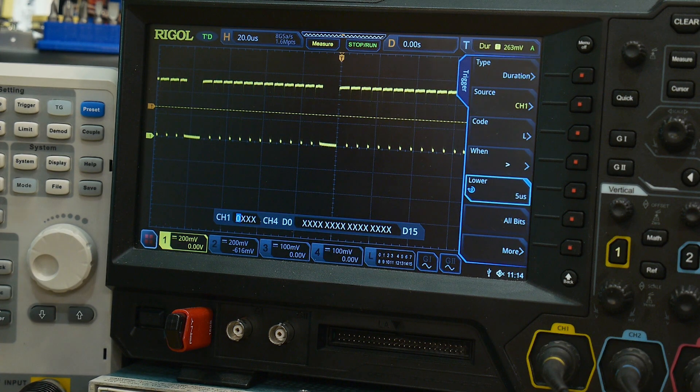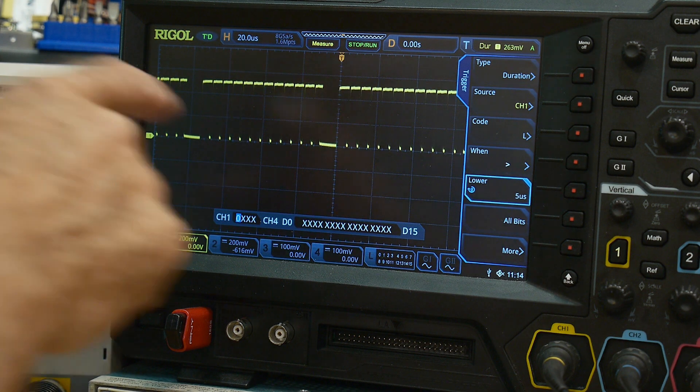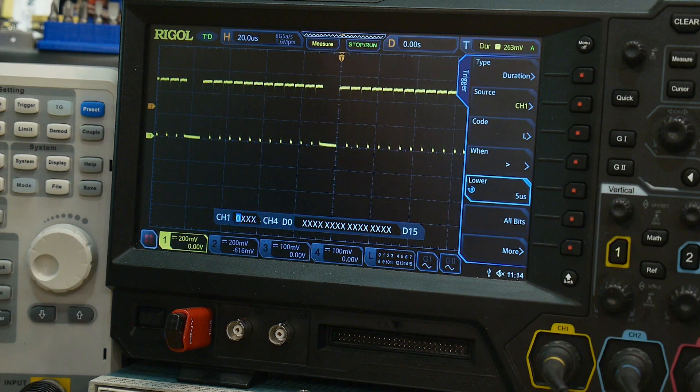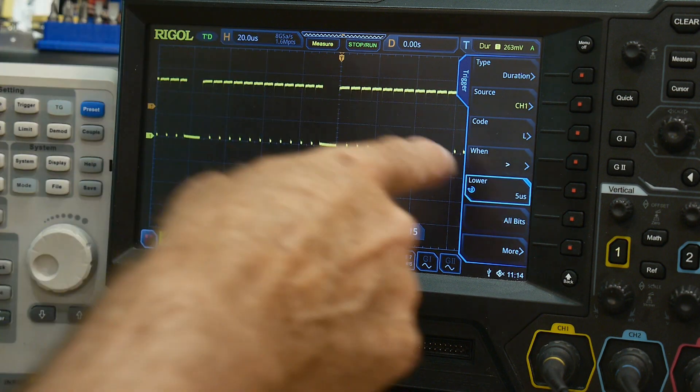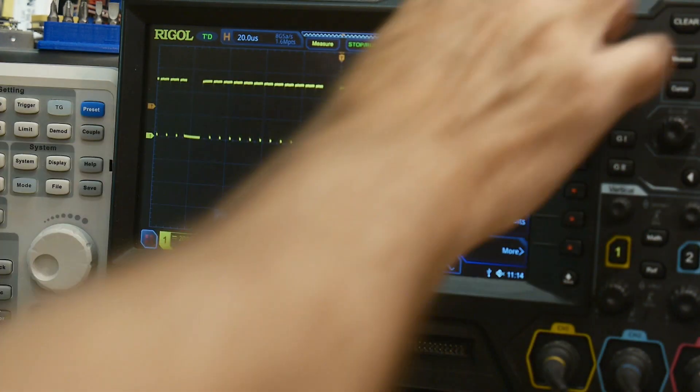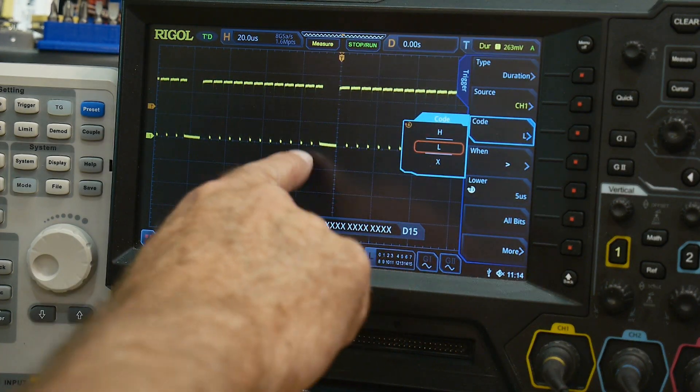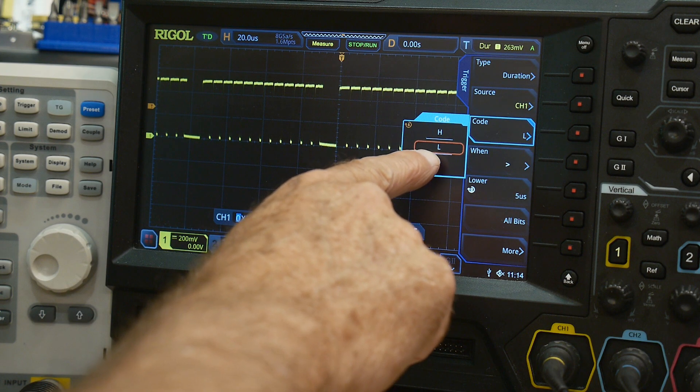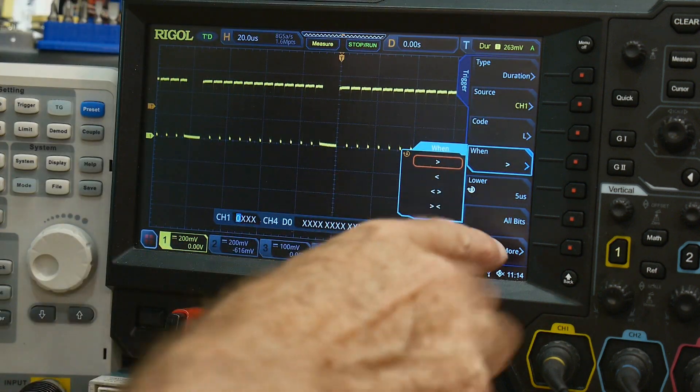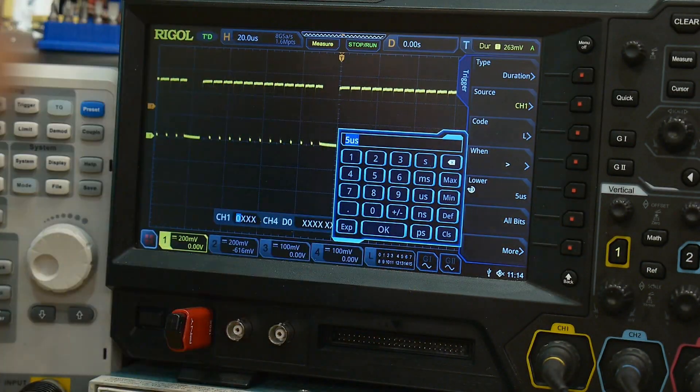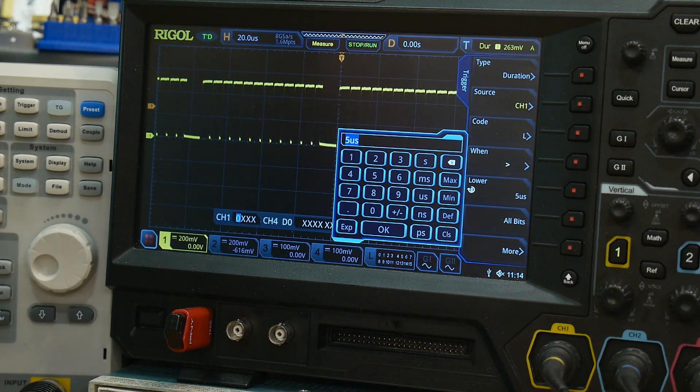So duration, you set what channel the trigger is on, channel one, and you can have it either a high state or a low state. If you want to trigger on a high state or a low state, I want to trigger on a low state, so I have it on the low. And then you say, I want it greater than some amount of time. I want it greater than five microseconds.